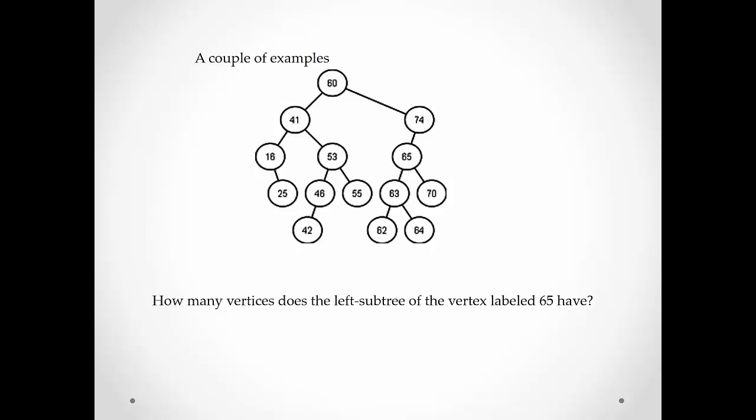To make sure that we're following this, let's take another example. How many vertices does the left subtree of the vertex labeled 65 have? We have to find the vertex labeled 65. Going from the root labeled 60, it has a right child labeled 74, and 74 has a left child labeled 65. 65's left child is 63, and it has two children, so there are three vertices in the left subtree of 65.